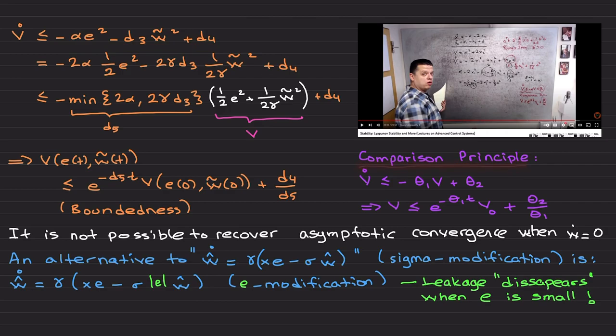We arrive at minus alpha e to the power of 2 minus d3 w tilde to the power of 2 plus d4. I am going to apply the comparison principle, which is explained in lectures on advanced control systems Lyapunov stability. In order to apply the comparison principle, I need to write this part as a function of V and some constant, so I am introducing two and dividing by one over two alpha, defining d5 to be the minimum of these terms.